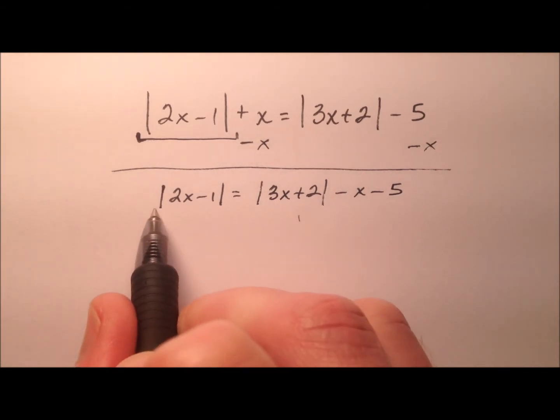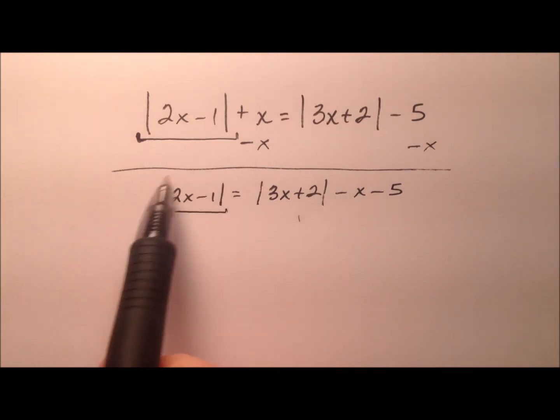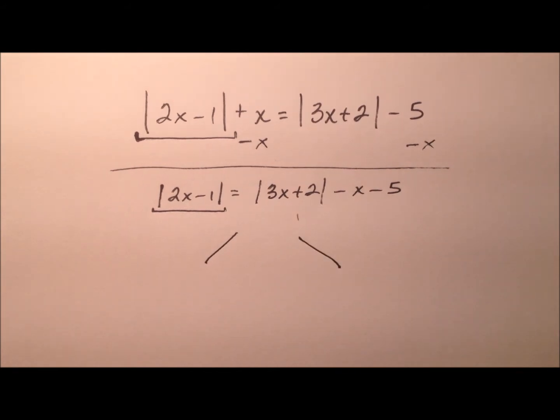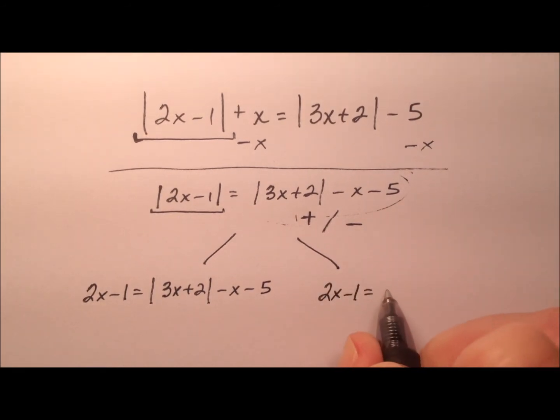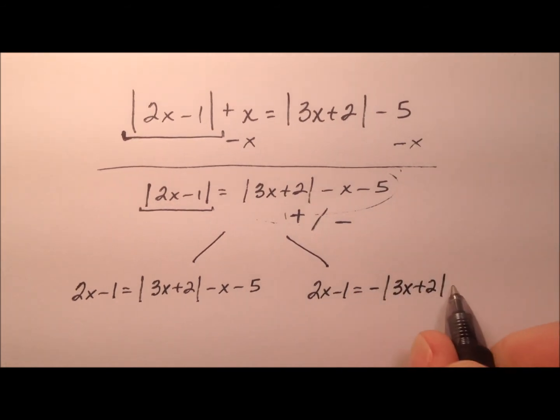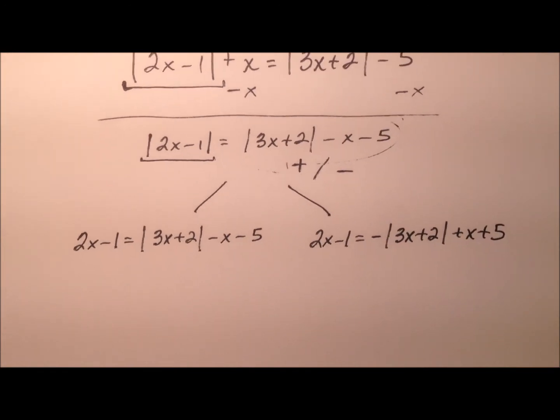Alrighty, so as we solve absolute value equations, once we have that isolated, we break it into two separate equations and this 2x minus 1 will reside on the left side of both of them. And as far as the right side is concerned, we'll have to take a positive version and a negative version. So let's go ahead and do the positive one first. So 3x plus 2 minus x minus 5. So we just kept all the signs the same. And now for the other one, 2x minus 1 equals the opposite of the absolute value of 3x plus 2 and then plus x plus 5 when we change those signs.